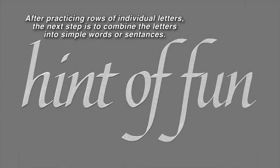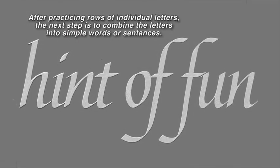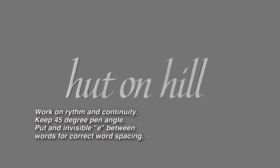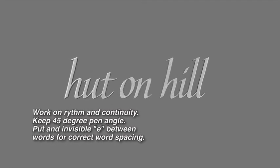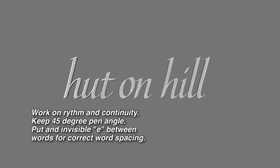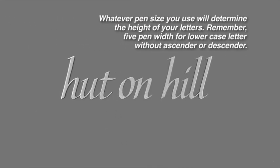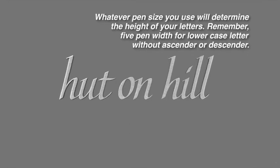After practicing rows of individual letters, the next step is to combine these letters into simple words. Try hint of fun or hut on hill. Work on rhythm and continuity. Keep a 45 degree angle on the pen constant. To help the word spacing, put an invisible E between words. Whatever pen size you use will determine the height on your letters. Five pen widths for lower case letters without ascender or descender.